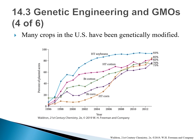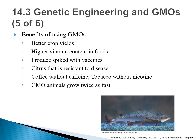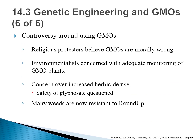GMO crops have been increasingly prevalent in the United States since being introduced in the 1990s. Benefits of using GMOs include better crop yields, higher vitamin content in food, crops resistant to disease, coffee without caffeine, tobacco without nicotine, and animals that grow twice as fast. Despite these benefits, there are controversies: some religious protesters consider DNA modification morally wrong, environmental groups are concerned about inadequate monitoring, and Roundup-resistant weeds are now growing on more than 10 million acres of US farmland.